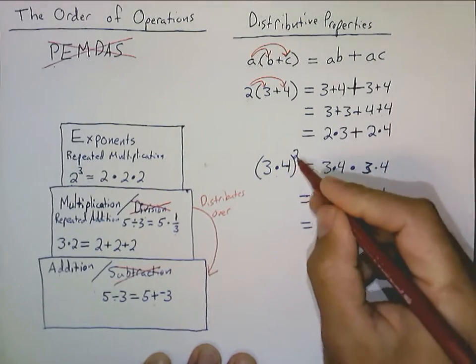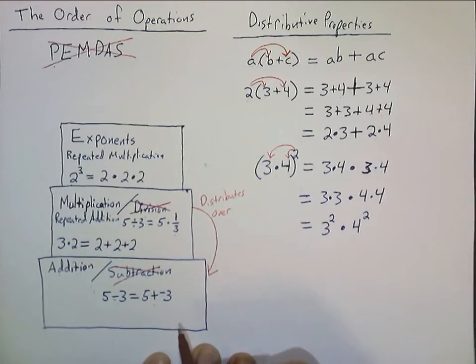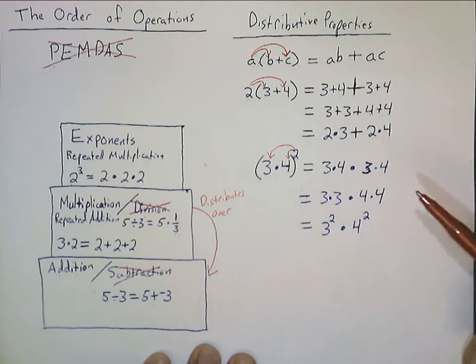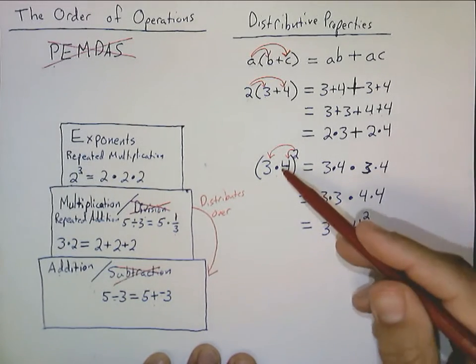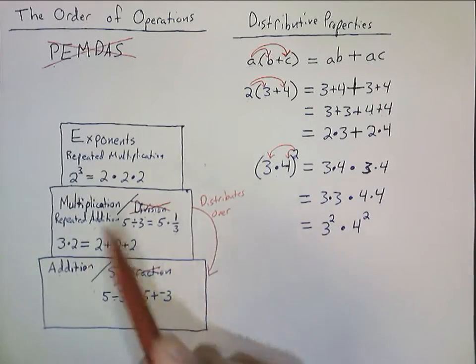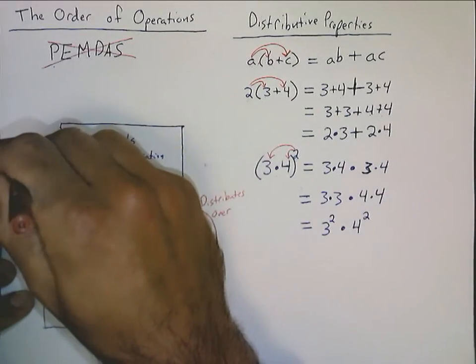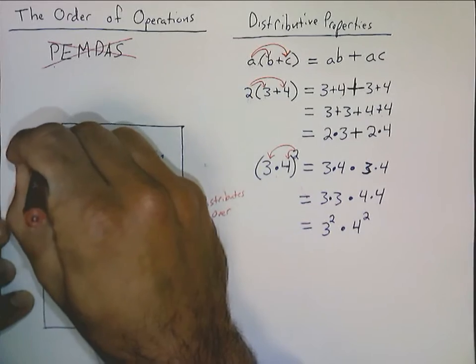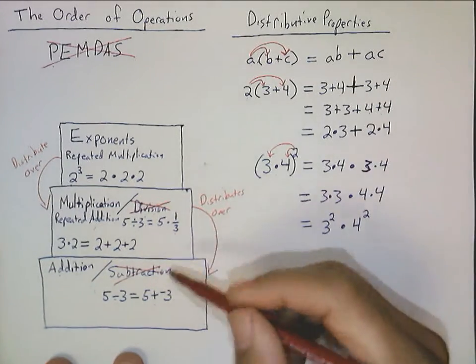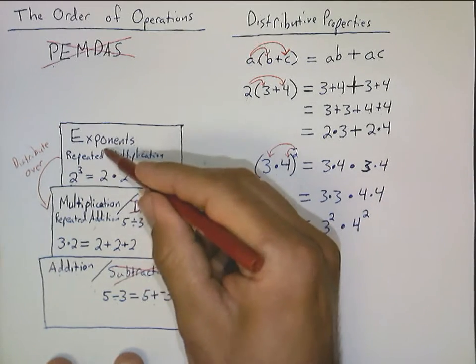So, basically, this exponent gets distributed to each of the factors in this product inside the parentheses. It's a second distributive property. A lot of times this one is called the product to a power rule. But, I think that just gets confusing, because really all it is is an extension of this idea here that multiplication distributes over addition, because multiplication is repeated addition. And, exponents distribute over multiplication, because exponents are repeated multiplication. So, exponents distribute over multiplication. That's how this works. One operation will distribute over the next operation down. Multiplication over addition, exponents over multiplication.